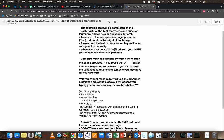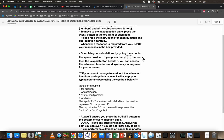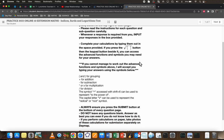Please read all the instructions carefully for each question. Whenever a response is required from you, input your responses in the boxes provided. For this test, you complete your calculations by typing them out in the spaces. If you press this little button that looks like a radical symbol with a square in it, and then the keypad button beside it, you can access the advanced functions and symbols you might need, especially for this test, because you can't just use a shortcut on the keyboard to do a radical symbol.